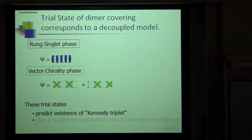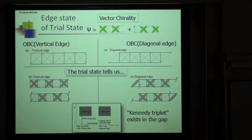After obtaining the decoupled model, we can make a trial state of the dimer covering, which corresponds to the decoupled model. In the rung-singlet phase, we can make wave functions with the dimer located on this rung. In the vector chirality phase, we make this kind of state. These trial states predict the existence of the Kennedy triplet.